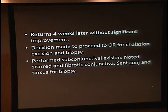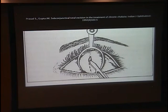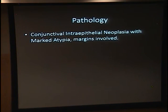In the OR, the lid was everted and a technique from an older paper was used: a conjunctival incision was made with a blade, the conjunctiva was dissected free with Westcott scissors, and the tarsus was exposed. Instead of another I&D, the tarsus was directly excised — removing the chalazion and obtaining tissue for biopsy. The conjunctiva overlying the affected tarsus was fibrotic and scarred, requiring more conjunctival removal than preferred. Pathology returned as conjunctival intraepithelial neoplasia (CIN) with marked atypia from the outside hospital. The case was then reviewed by Dr. Mamelis to ensure this was not sebaceous cell carcinoma. Margins were involved.